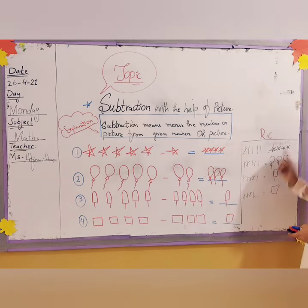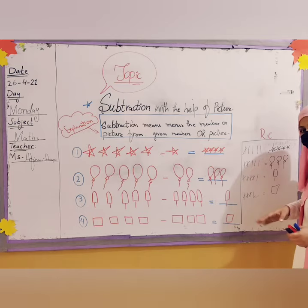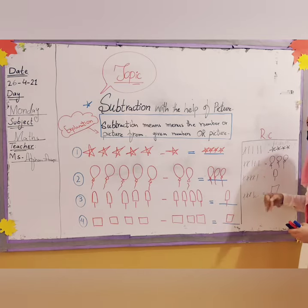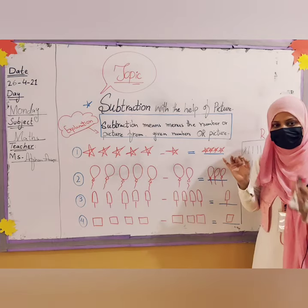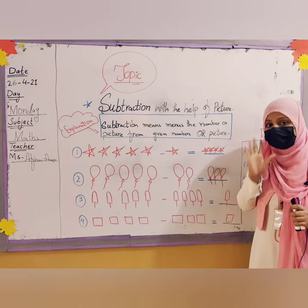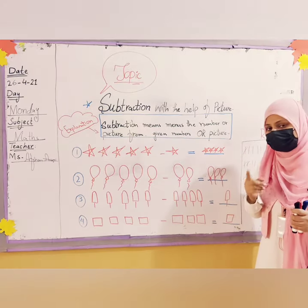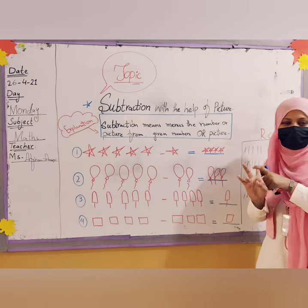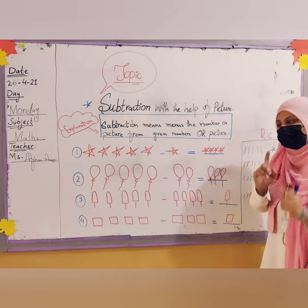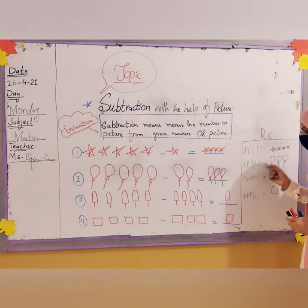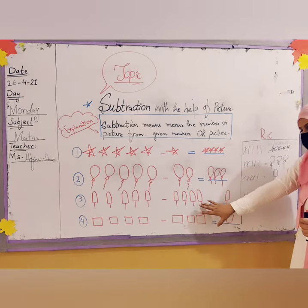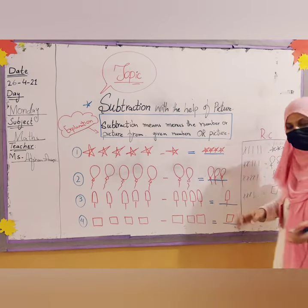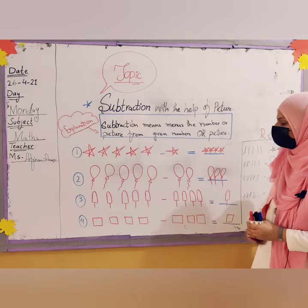Remember, a rough column should be on every page — for addition and subtraction both. Because students have trouble with subtraction — knowing how many to minus — this method of drawing lines and crossing them out is the correct formula. Count what remains after crossing out.